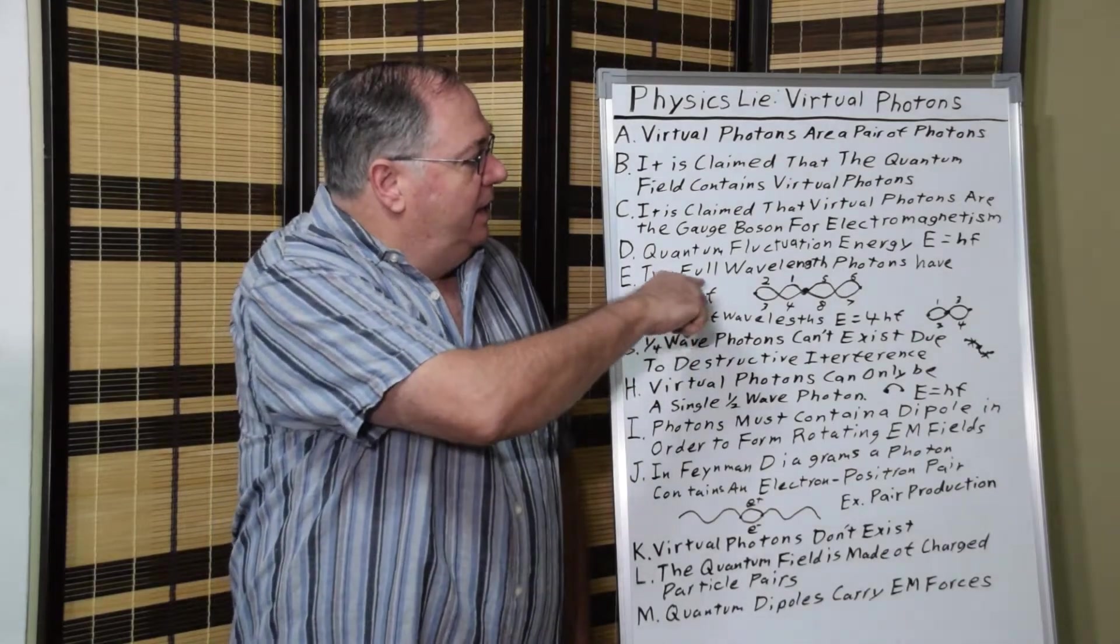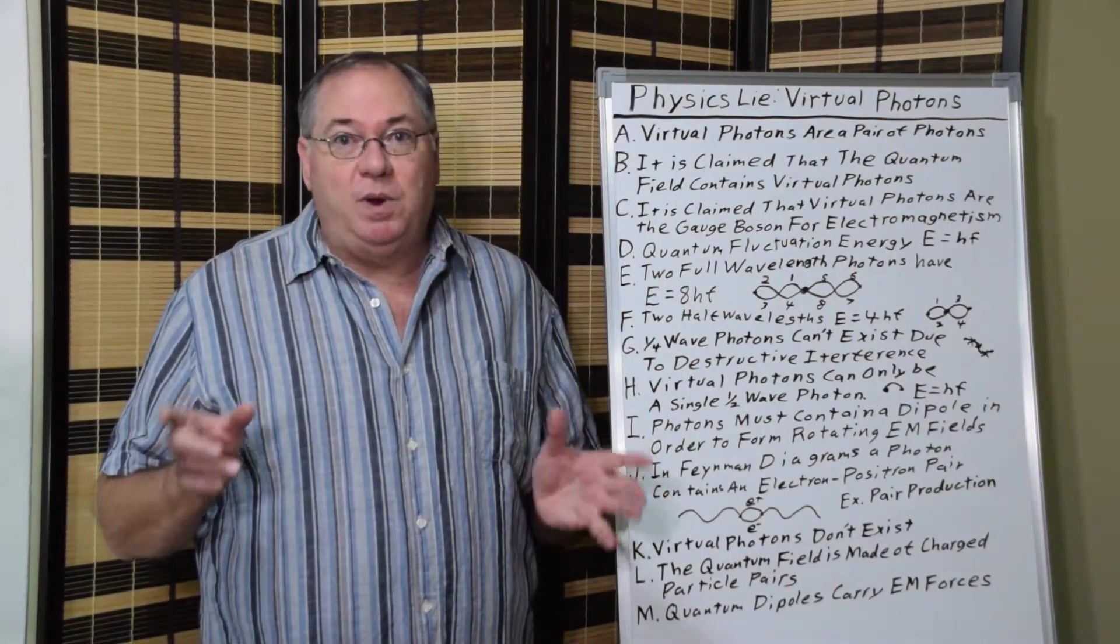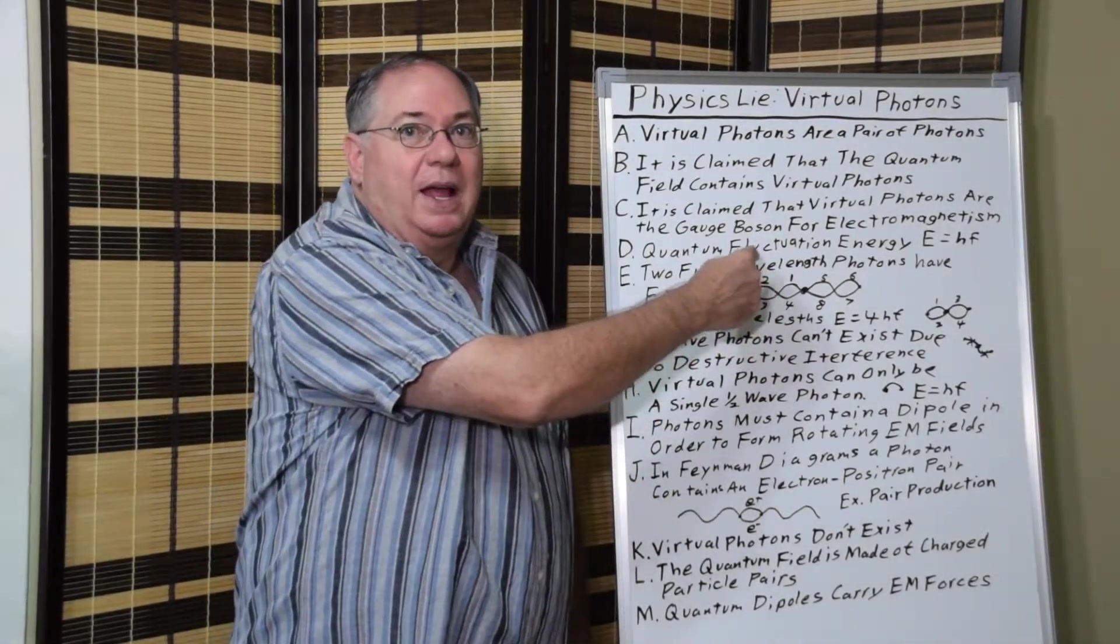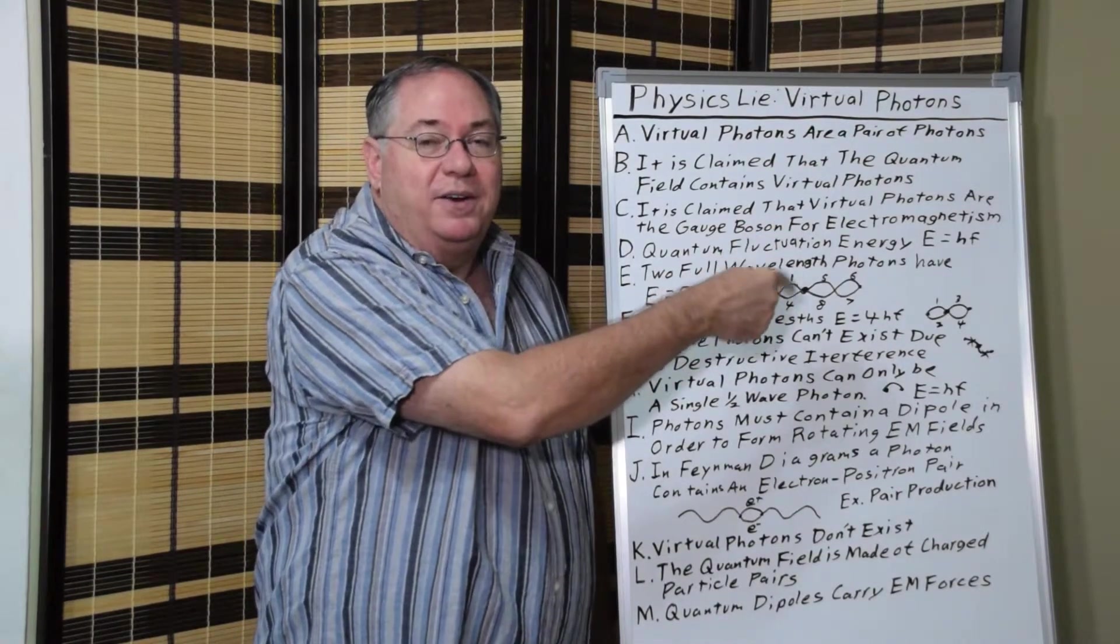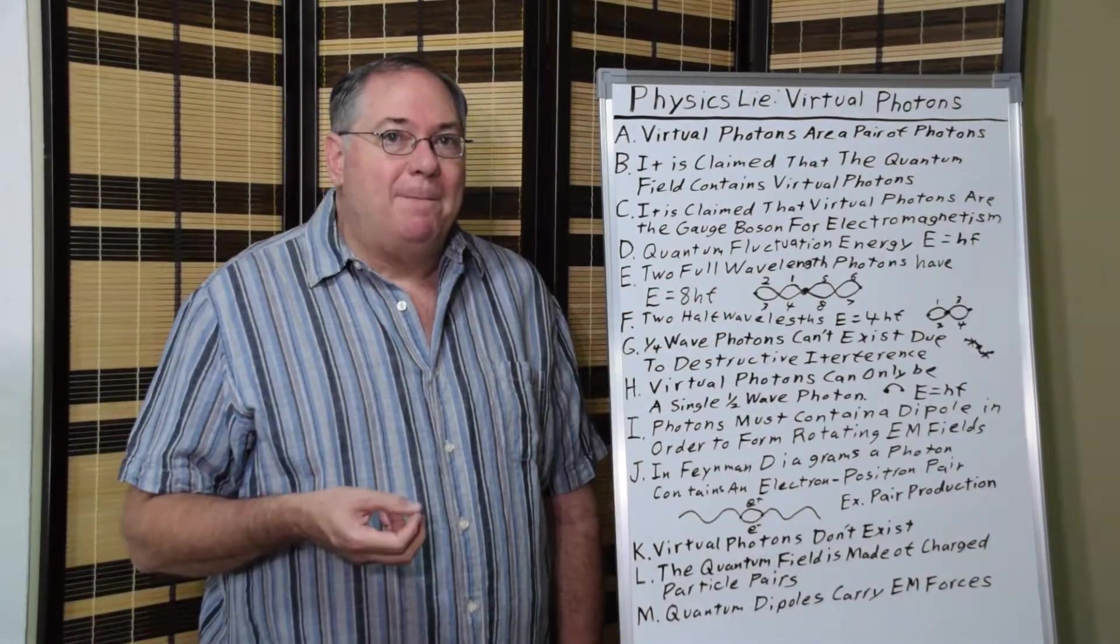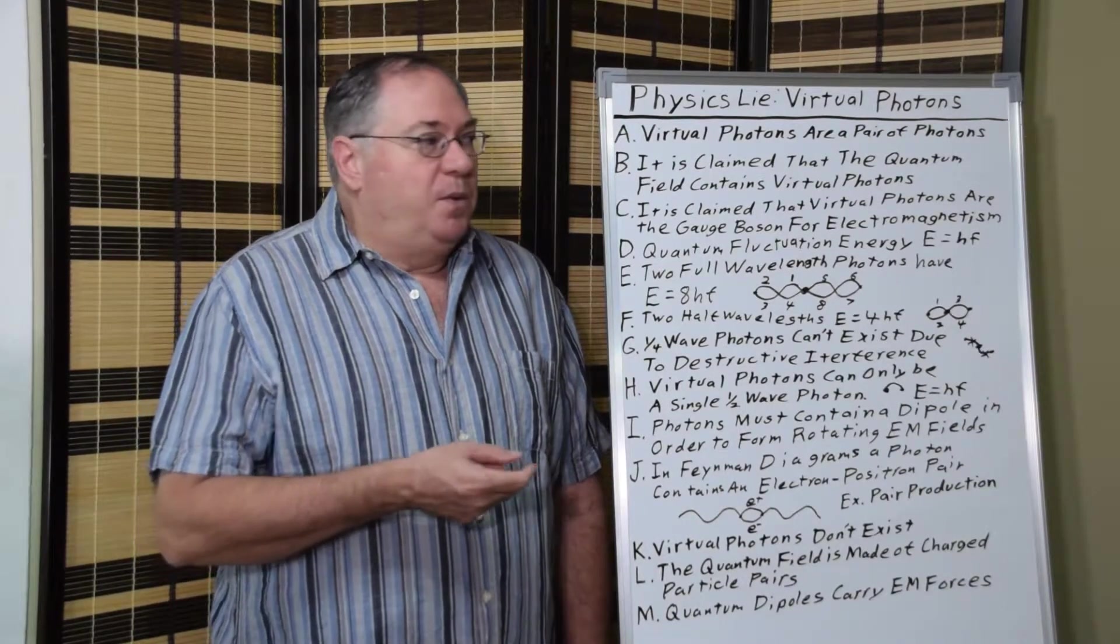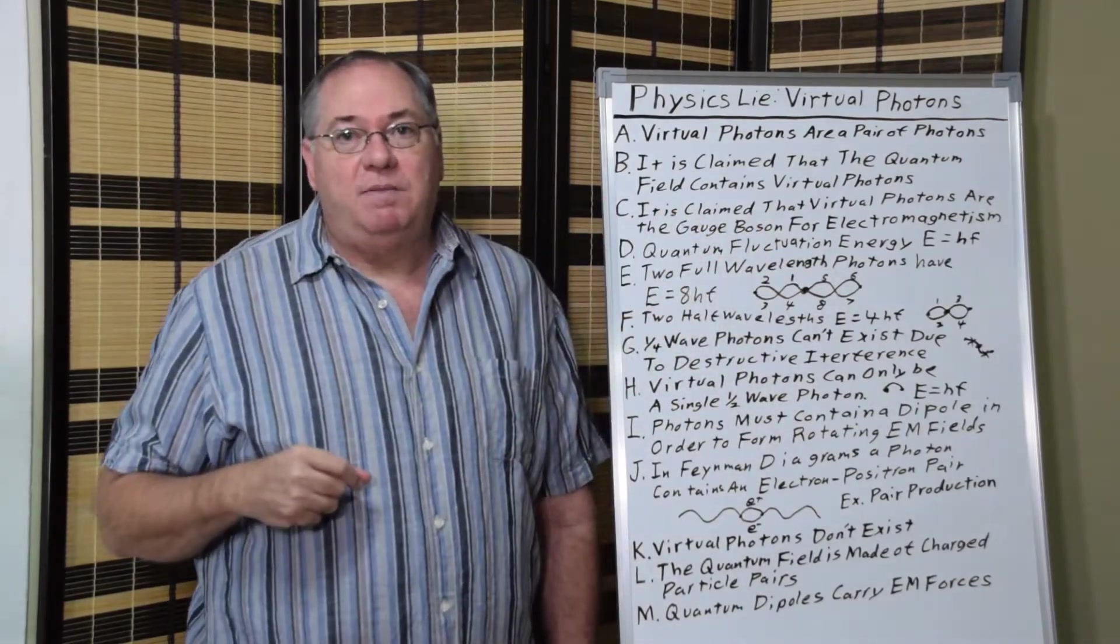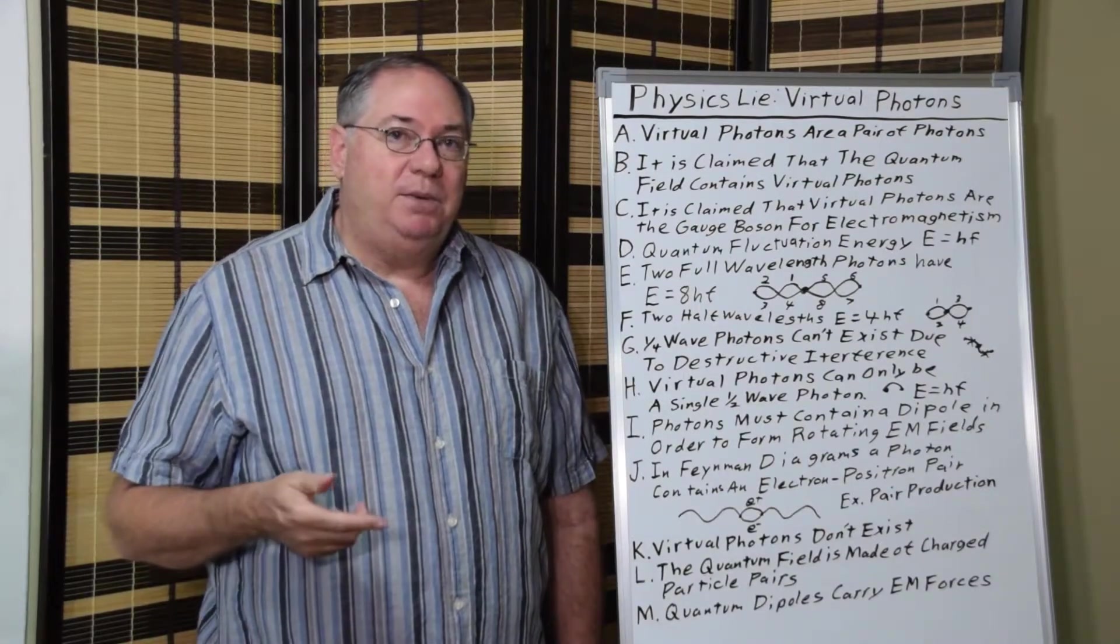But if we consider a photon that's a pair of photons, each one wavelength long, each one goes out a half cycle, then another half cycle, then back half cycle, and another half cycle. Each half cycle has the energy of E equals HF. So when you sum up all the half cycles for both photons, you get 8 HF, which is 8 times too much energy.